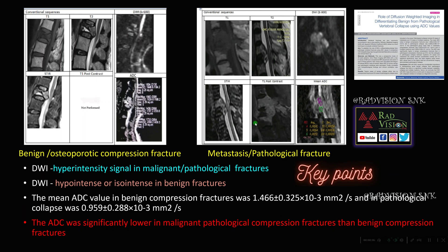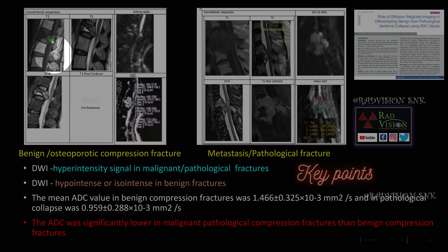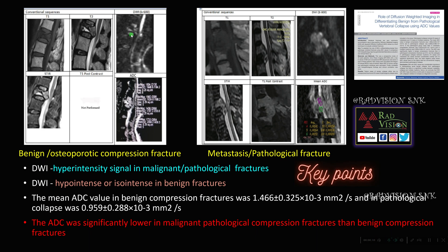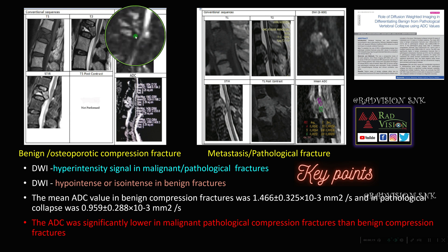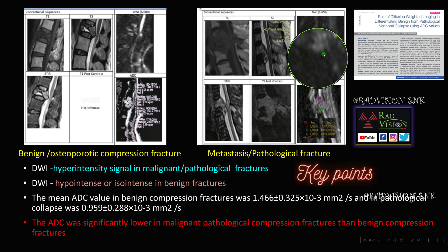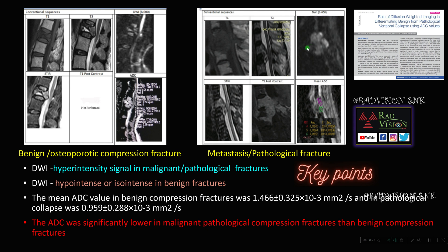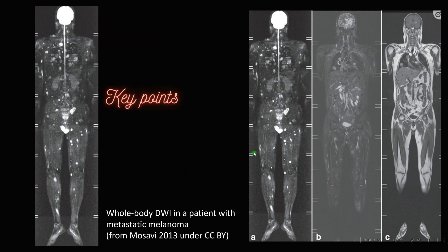Next: DWI helps in differentiating osteoporotic compression fractures from pathological fractures. This was an osteoporotic compression fracture, but this was an ovarian metastasis to the cervical vertebra — a pathological fracture. DWI will not be seen in osteoporotic compression fractures, whereas DWI will be seen in pathological or malignant compression fractures, and ADC values will be significantly lower in malignant pathological fractures compared with benign compression fractures.